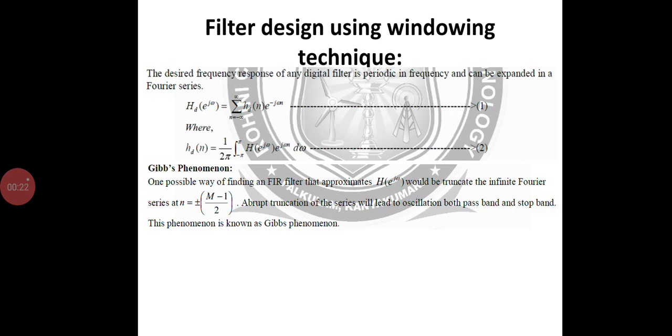The desired frequency response of a digital filter is periodic in frequency and can be expanded in the Fourier series. This is h(t) of e^(jω) equal to summation of this value, where h(n) can be given by using this second formula.